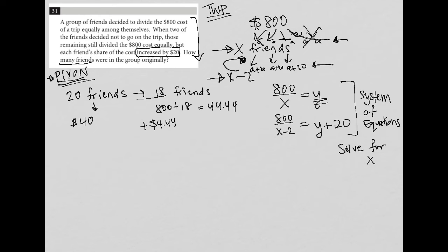Let's try 40 friends. So if there were 40 friends, what would happen? Each would pay $20 because 800 divided by 40 is 20. And if we said, okay, now there's only going to be 38 friends, we could then say what is 800 divided by 38? And what I get here is $21.05. So again, an addition of $1.05.